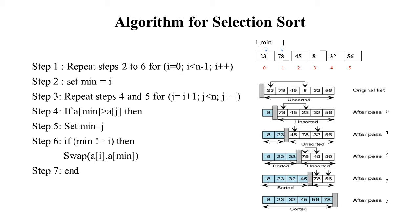Algorithm for selection sort. In selection sort, we first select the smallest element and exchange it with the first location element. Step 1: repeat steps 2 to 6 for i = 0, while i < n-1, incrementing i. Here, i points to the 0th location. i is used for passes, starting from 0. Since n is 6, n-1 is 5, so i < 5, meaning passes run from 0 to 4.